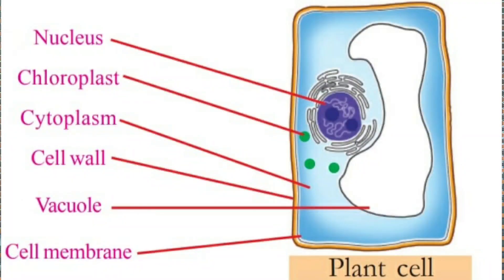The organelles of a plant cell are: cell wall, cell membrane, cytoplasm, nucleus, chloroplast, and vacuole. Let's study them one by one.